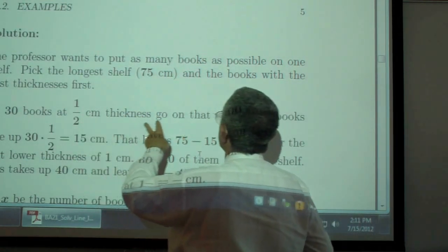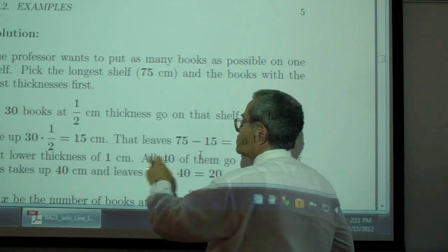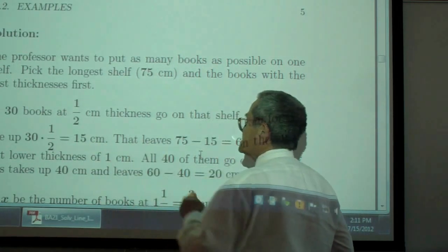There are 30 books at one-half centimeters which go on the shelf, which will occupy 30 times one-half or 15 centimeters.